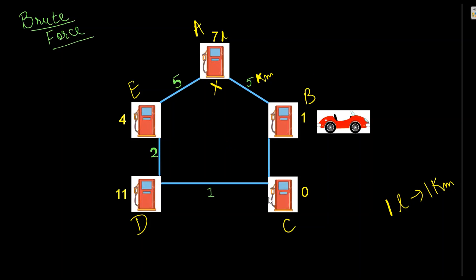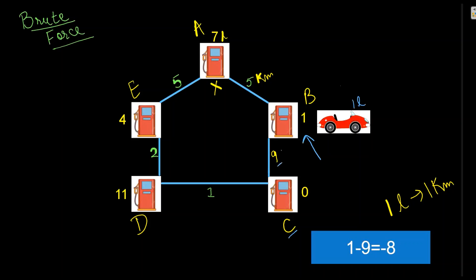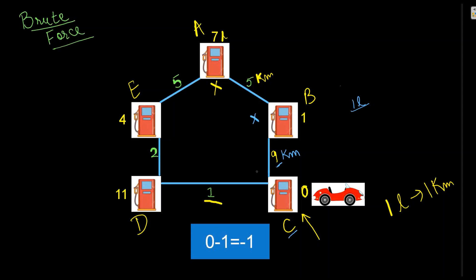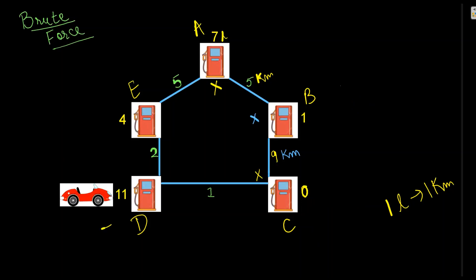Since the car could not reach even petrol pump C when starting from A, we discard A. We are looking for a point where the journey starts and ends at the same point. Let's try starting from petrol pump B — charging one liter, but nine kilometers to C means we can't make it. Drop B. Try starting from C — zero petrol available, and one kilometer to travel to D, so we drop C as well. Now let's start from petrol pump D.